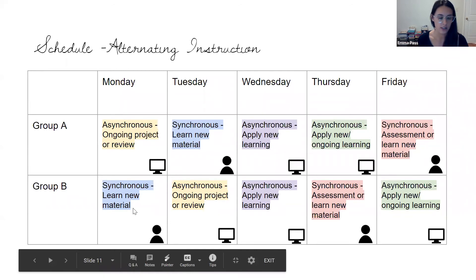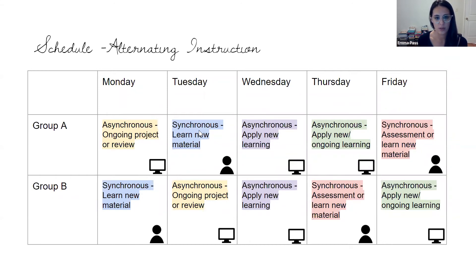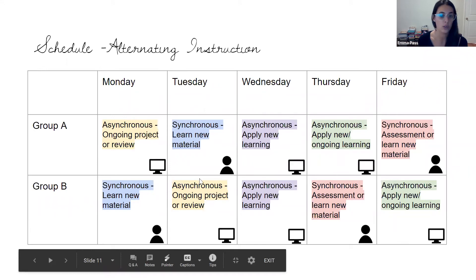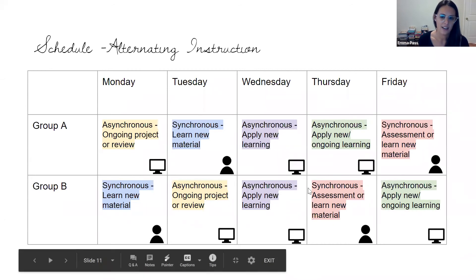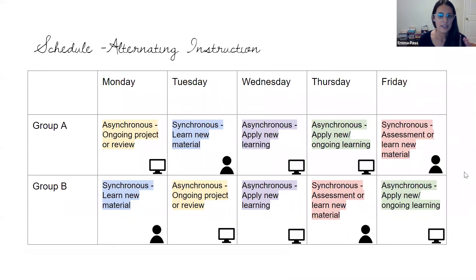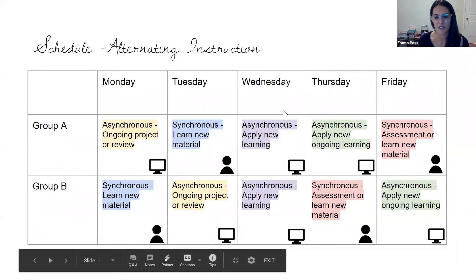Whereas group B is in the classroom with me learning new material — doing a Pear Deck, doing that practice and application. Then the next day they switch. Group A gets the synchronous lesson in person; group B goes to work on that ongoing project or review. On Wednesday, all students are asynchronous — they all get a lesson that applies the new learning from their Monday or Tuesday lesson. Thursday and Friday repeat the pattern. Still planning five lessons a week — you just have Monday and Tuesday's lessons planned before Monday, Wednesday's by Tuesday, and Thursday and Friday's by Wednesday.